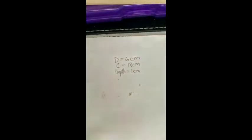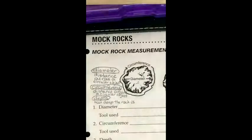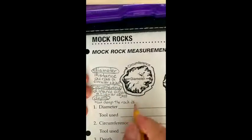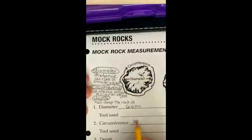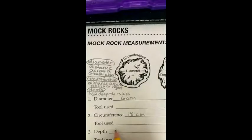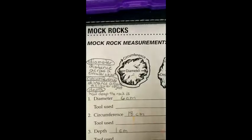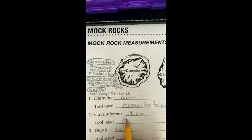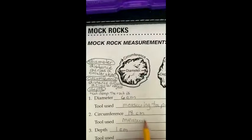Now I'm going to take us back to our paper and fill in the proper answers for what we did. The diameter is 6 centimeters, the circumference is 18 centimeters, and the depth of this particular one was one centimeter. The tool that was used was the measuring tape — the measuring tape in each case.